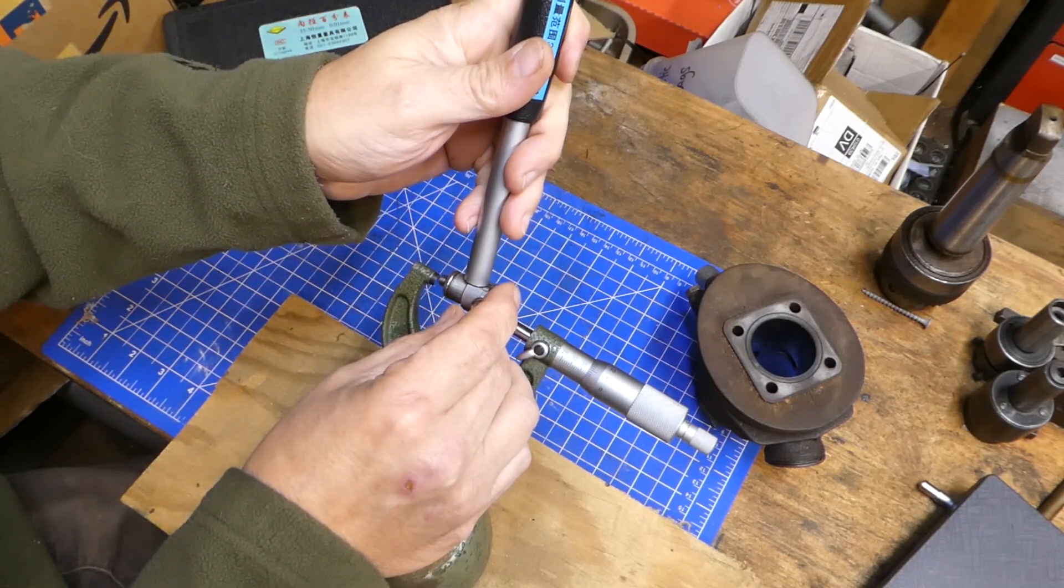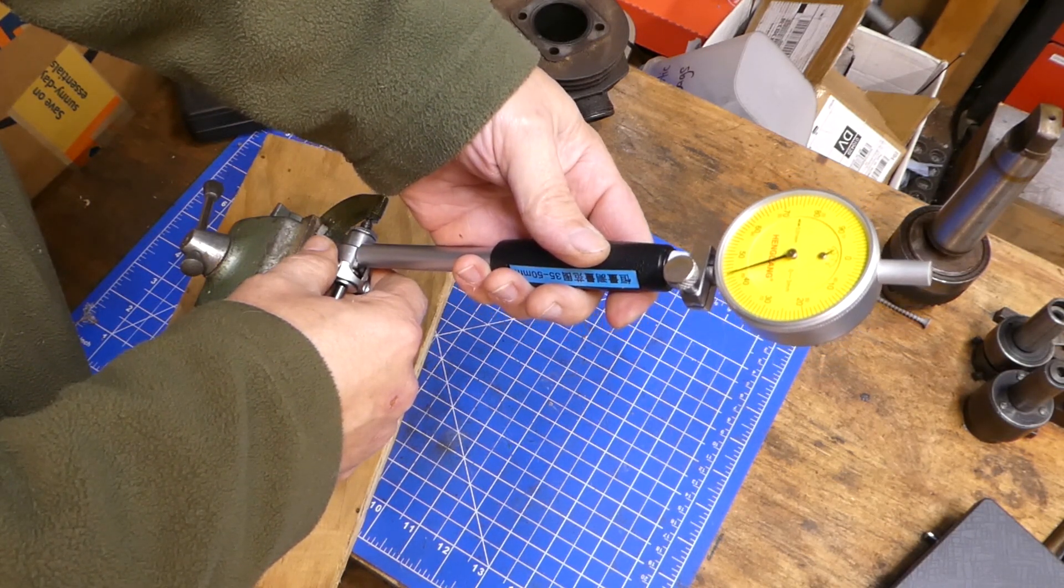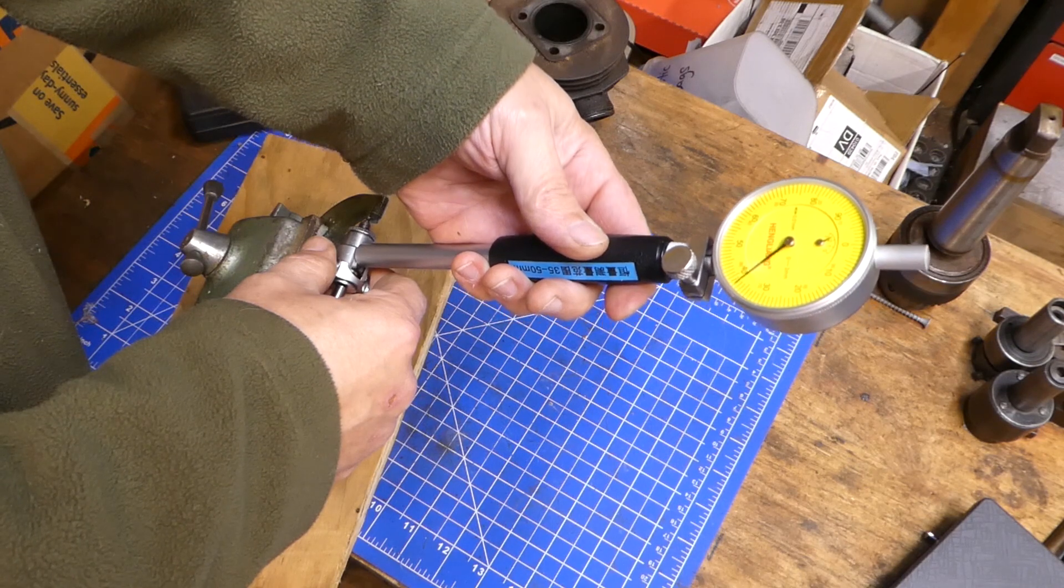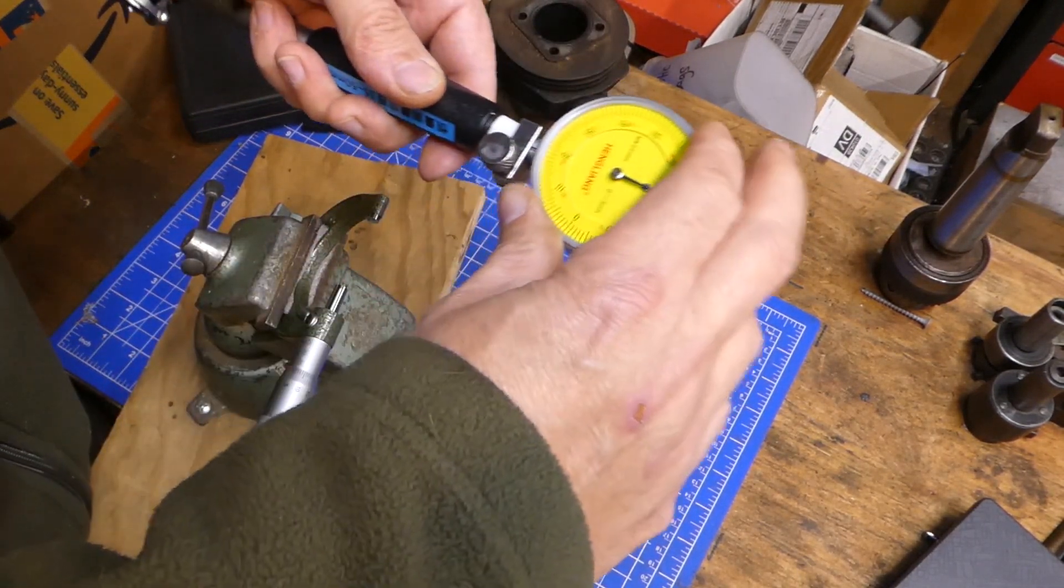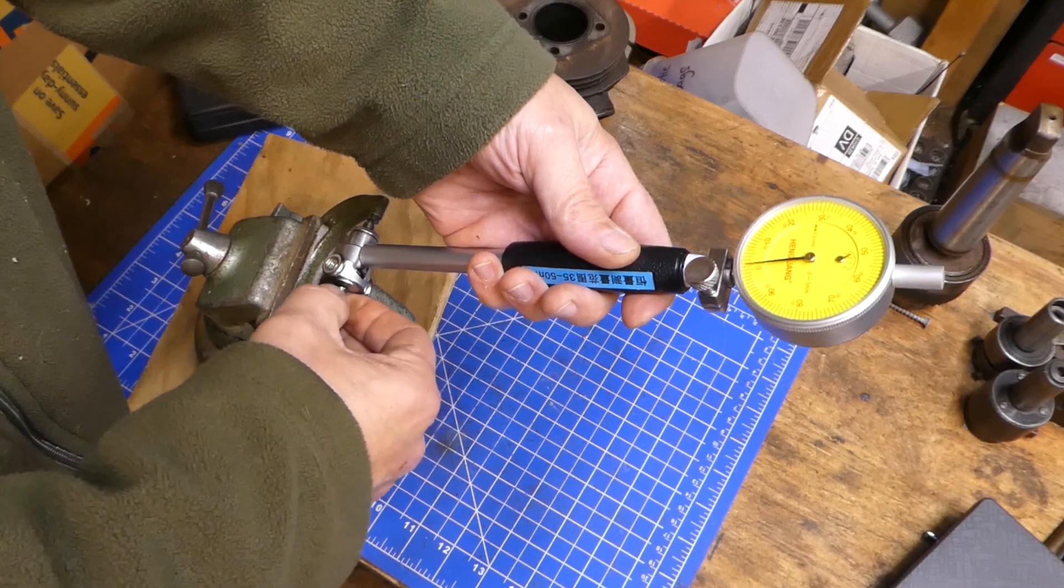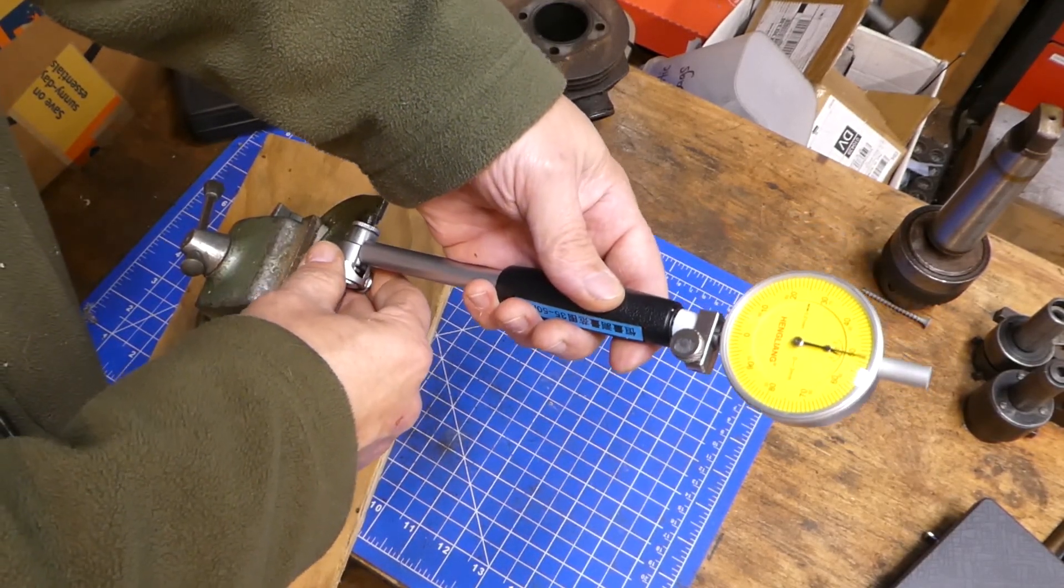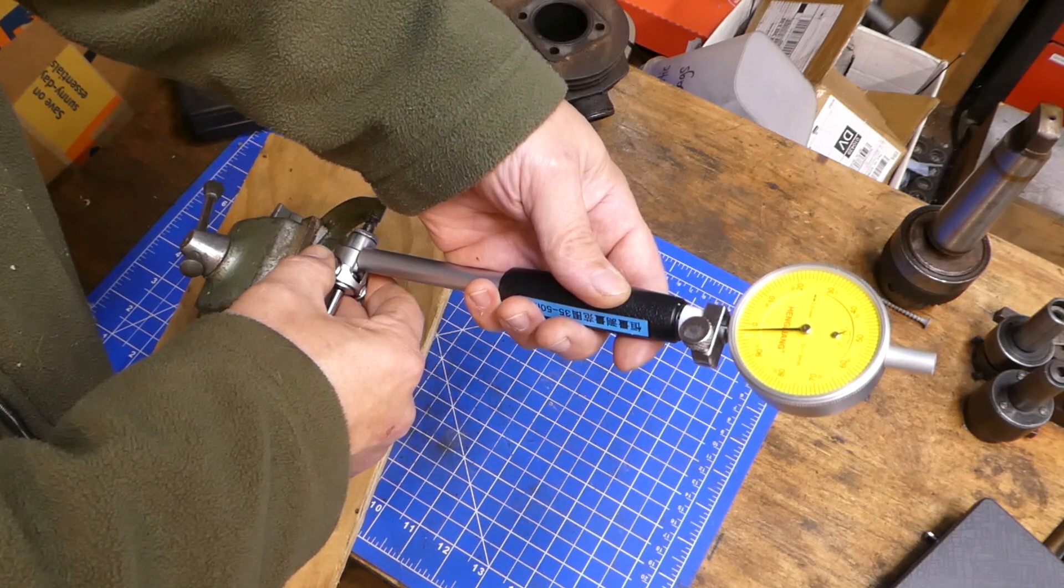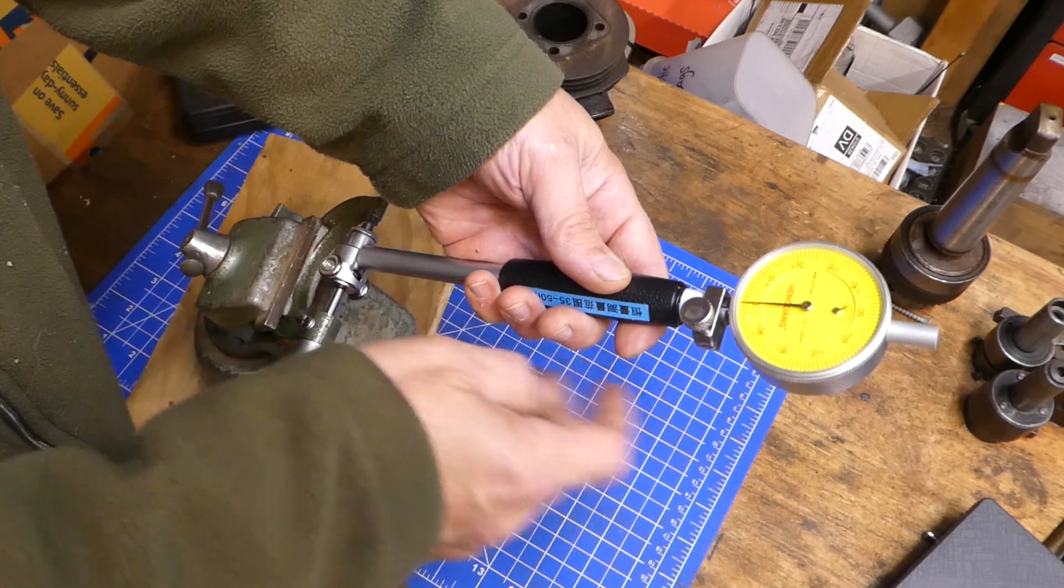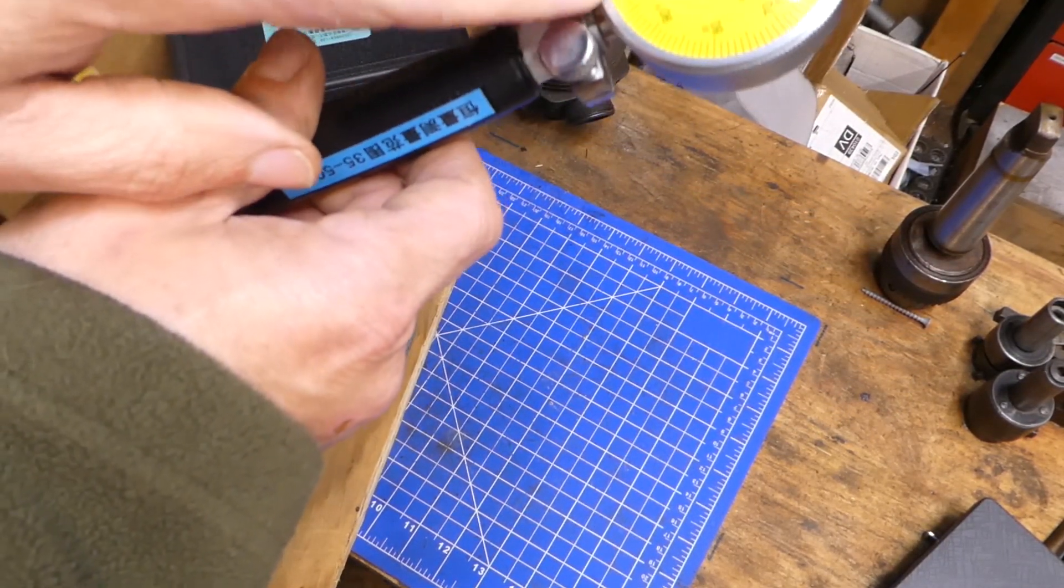First thing I'm going to do is I'm going to calibrate the bore gauge to 38 millimeters. And all that means is I'm going to put it in here and we're going to find the smallest setting. You see the needle moving there. See it reverses itself. That's the smallest setting down there right near the bottom. I'll go ahead and rotate the dial and get it close to, I'm going to put the zero at where I think the needle is going to end up. I had it off a little bit the first time.